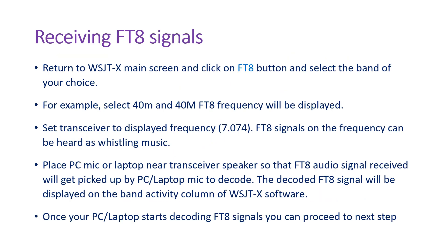Return to the WSJTX main screen, click on the FT8 button on the lower left side of the panel, and then select the band of your choice. For example, select 40 meters — the 40 meter FT8 frequency will be displayed. Set your transceiver to the displayed frequency. For 40 meters, the FT8 frequency is 7.074 megahertz.